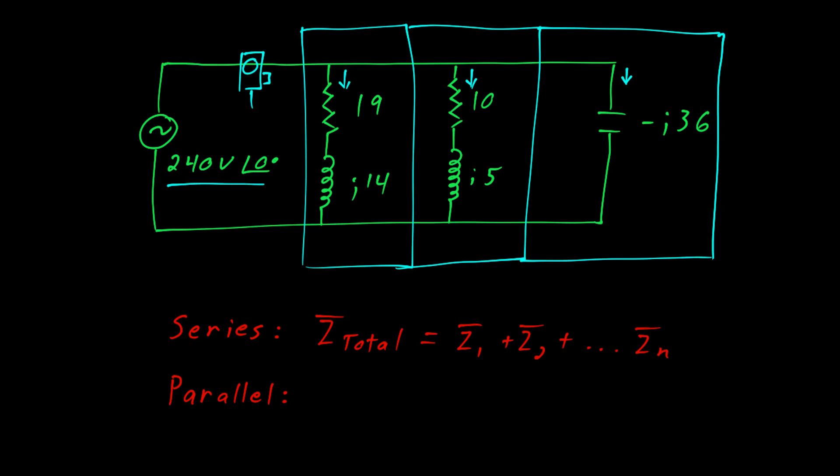Now contrast that with a parallel circuit where the total admittance is equal to the sum of the individual admittances. We also know that impedance is the reciprocal of admittance and admittance is the reciprocal of impedance. These facts will make our calculations much easier.